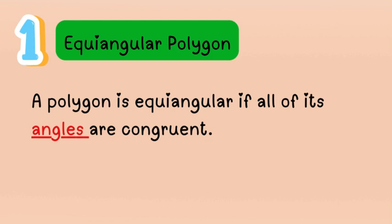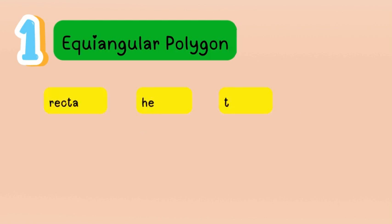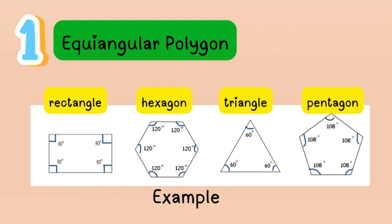What are the examples of equiangular polygons? An equiangular polygon has the same value of interior angles. We have the rectangle, where all angles are 90 degrees because the two lines are perpendicular to each other. We also have a hexagon and a triangle.